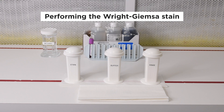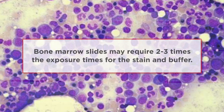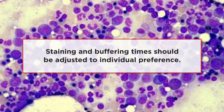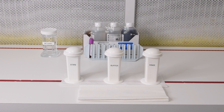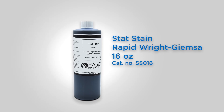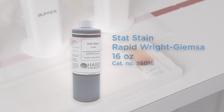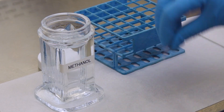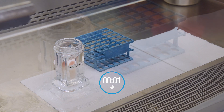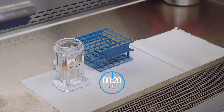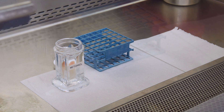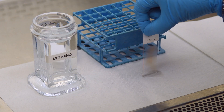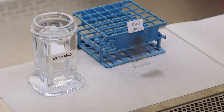The following procedure is recommended for staining peripheral blood smears. Bone marrow slides may require two to three times the exposure time for the stain and buffer. Staining and buffering time should be adjusted to individual preference. For bone marrow smears using the RapidRite one-step stain, double the times described. Step 1: In a fume hood, fix the slide using absolute methanol for 30 seconds. This will ensure cells attach to the slide and will not wash away during the staining procedure, ensuring the best stain quality. When finished, allow the slide to air dry. Do not use heat to fix or dry the slide, as heat will distort and alter the cell morphology and interfere with the staining characteristics.